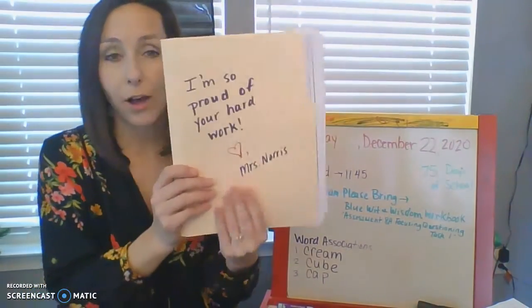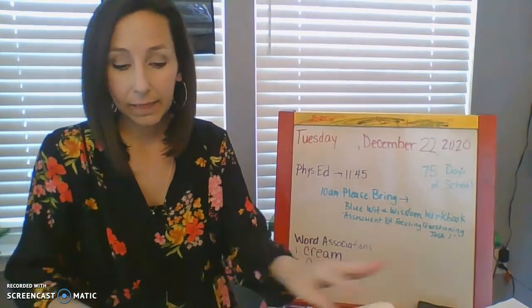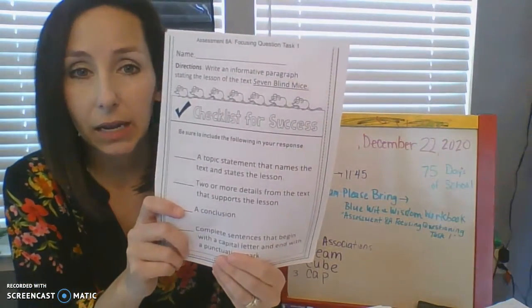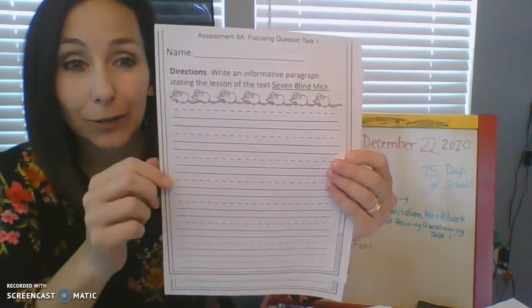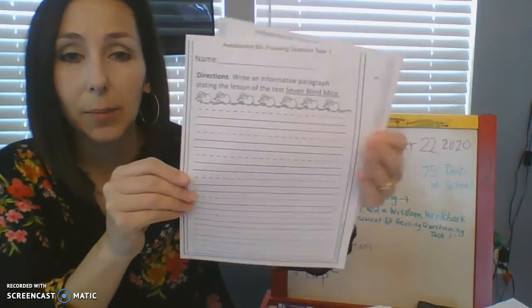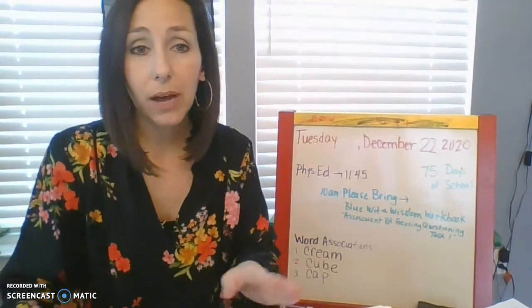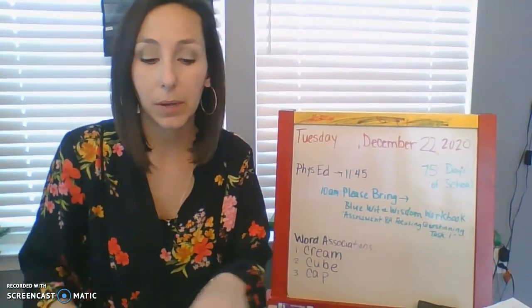If you could also check in the most recent supply box folder — this was picked up in November. In that folder are papers that say assessment 8A, focusing question task 1. There are two pages: one with the question and little mice across the top, and a second page with lines if you need extra space. If you have any trouble finding it, it is just lined paper, so if you needed to use a plain piece of paper, that's no problem either.